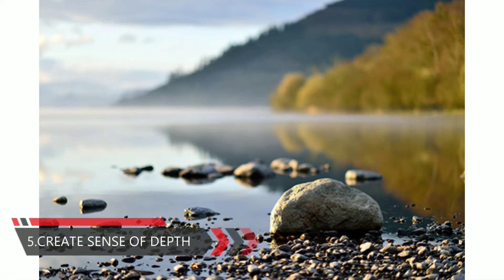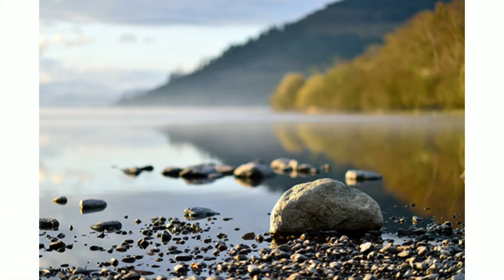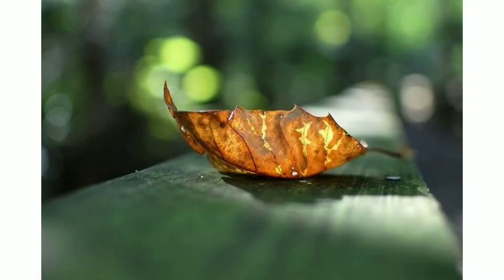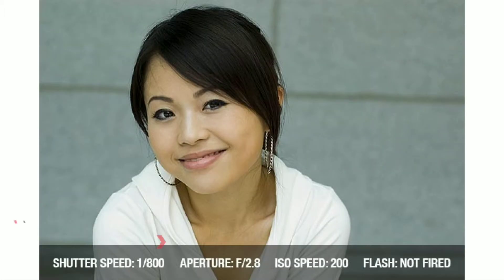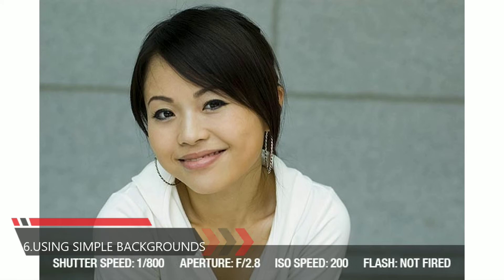The fifth tip is to create a sense of depth. If you are going to take any landscape photos, use a minimum aperture value. By keeping the aperture value minimum, both the foreground and background become very sharp. Also use a tripod to avoid camera shakes, because small values of aperture require more stability. Avoid using bare hands and go for a tripod to get better shots with great clear images.